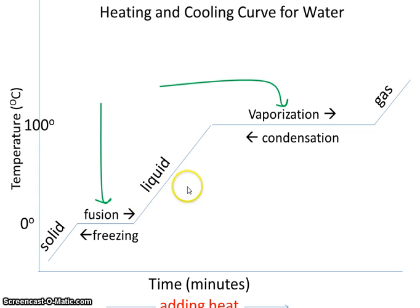So where is that heat going if it's not going towards raising the temperature? I mean, during the liquid phase, when we add heat, the heat goes to making the molecules move faster, and the faster moving molecules have a hotter temperature. But that's not what we see here. So what's going on?